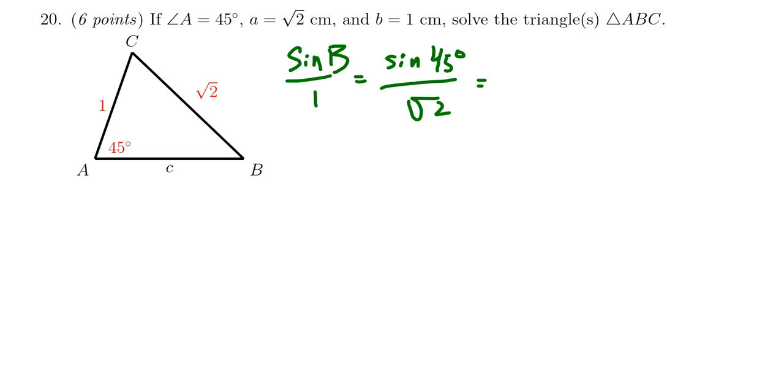Simplifying that, we end up with sin B which equals sin 45°, which is √2/2, divided by √2. You can think of this as multiplying by the reciprocal. The square roots of 2 cancel out, and we end up with sin B equals 1/2.